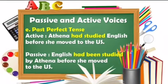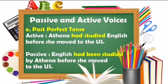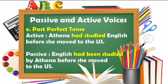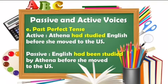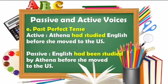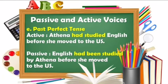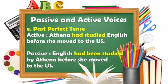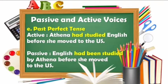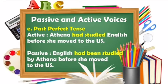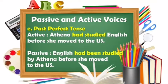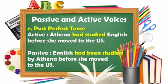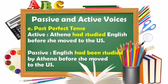The fifth one is past perfect tense. In active voice: 'Athena had studied English before she moved to the U.S.' Athena is the subject, had studied is the action, and English is the object. If we transform it into passive voice: 'English had been studied by Athena before she moved to the U.S.' The object is English, had been studied is the action, and Athena is the subject introduced by the preposition 'by.'